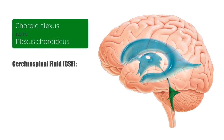The CSF leaves the ventricular system and enters the subarachnoid space through the three apertures of the fourth ventricle — two lateral apertures on both sides and a single median aperture. Cerebrospinal fluid then flows superiorly within the subarachnoid space and eventually passes into the dural venous sinuses for reabsorption into the venous system by the arachnoid villi.